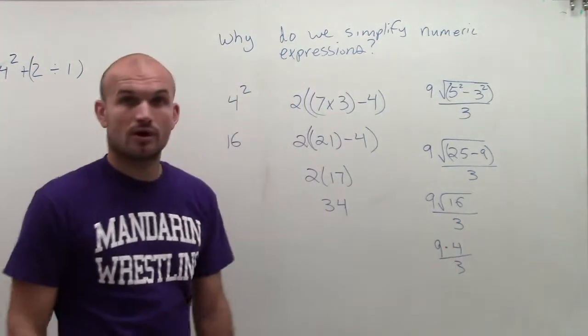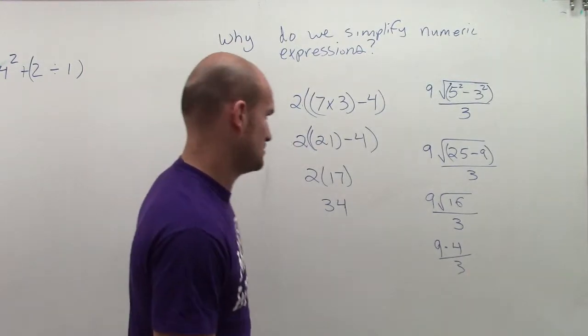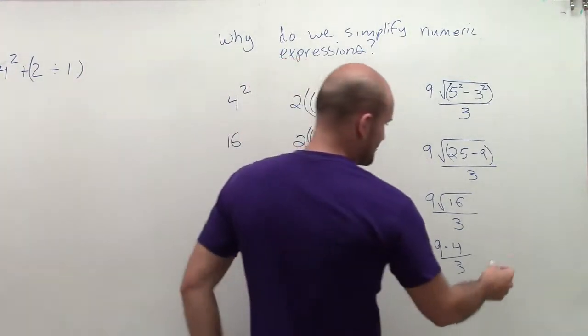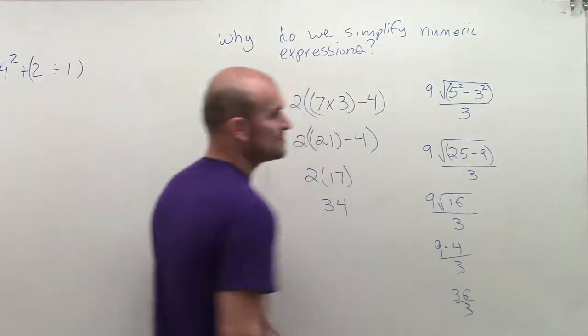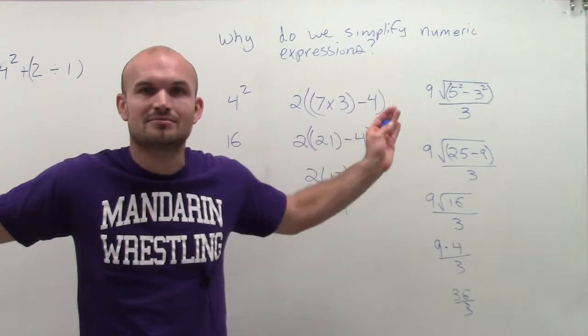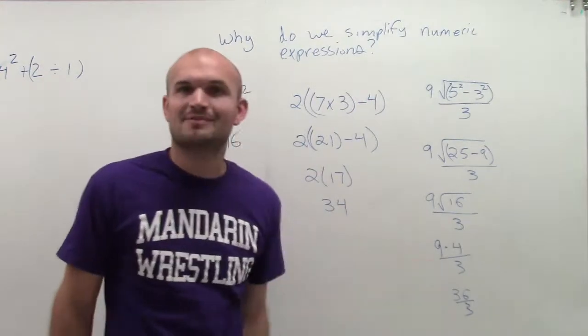9 times 4, which gives us, square root of 16, 9 times 4, which gives us 36. So then I have 36 divided by 3. And a lot of students just want to leave it like that. They're like, oh, I'm done. I'm good.